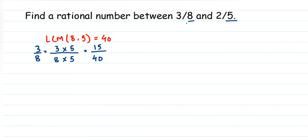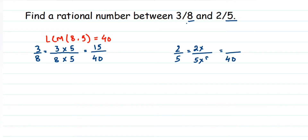The same way for the second number, 2/5, we want 40 in the denominator. So what should we multiply by 5 to get 40? We know 5 times 8 is 40. So multiply 8 in the denominator and also in the numerator. So 2 times 8 is 16. Here we got 15/40 and 16/40.